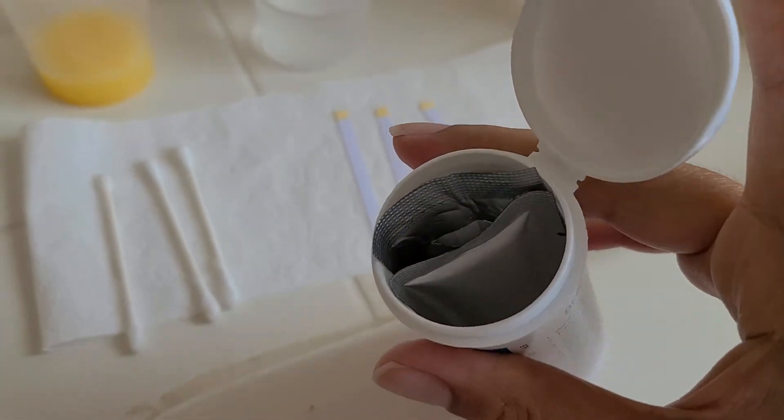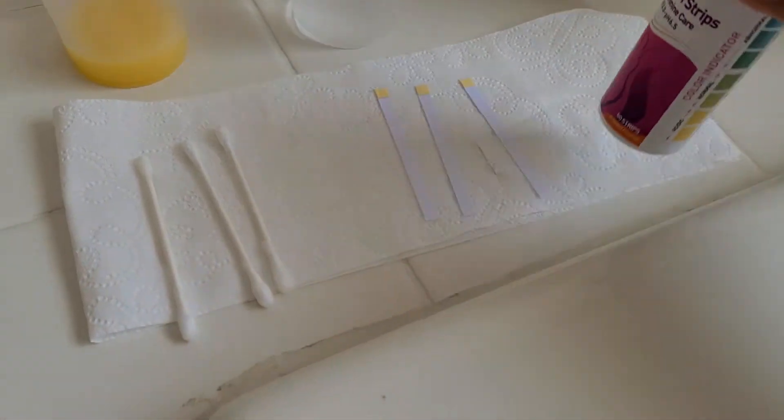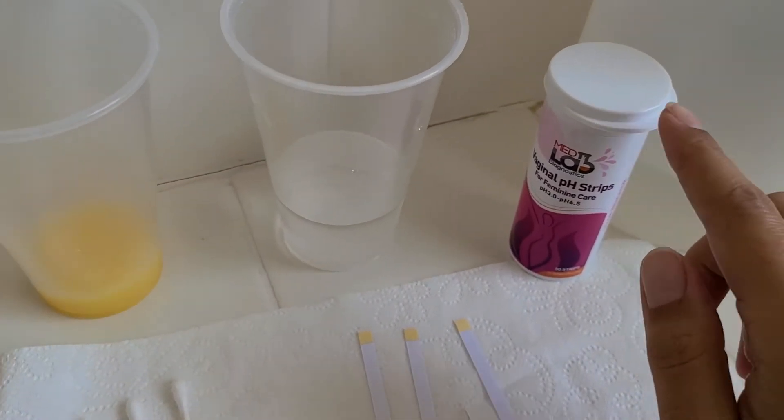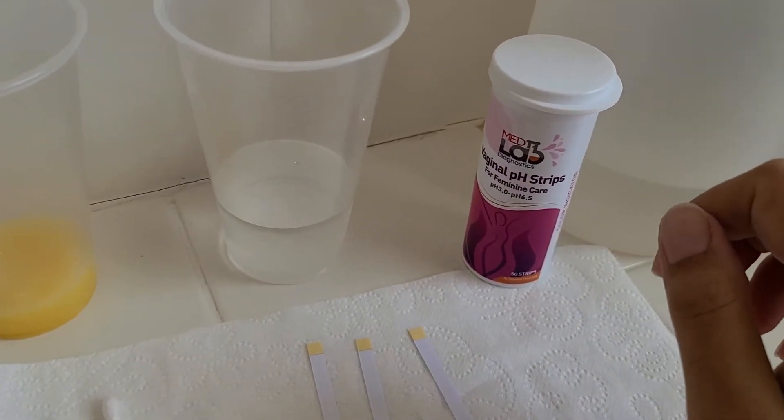So you take one of these out and you open the seal, and then you take out your strips. After you open the seal on the pouch, try to fold it so that you can maintain the freshness on the strips.